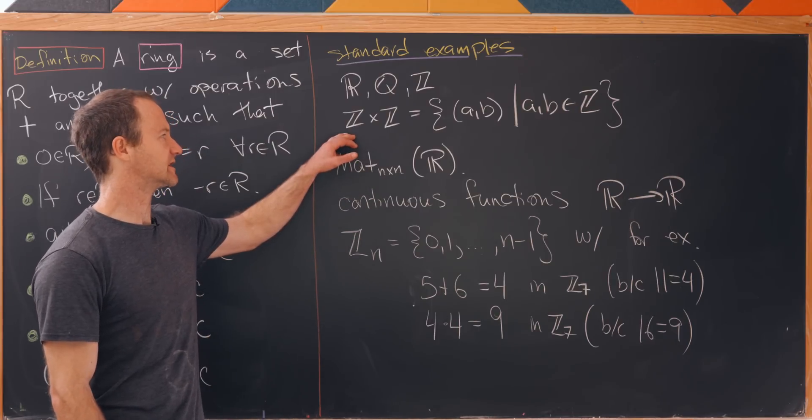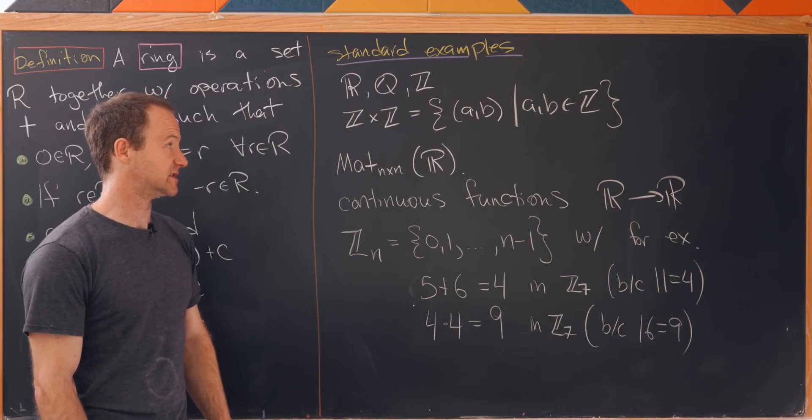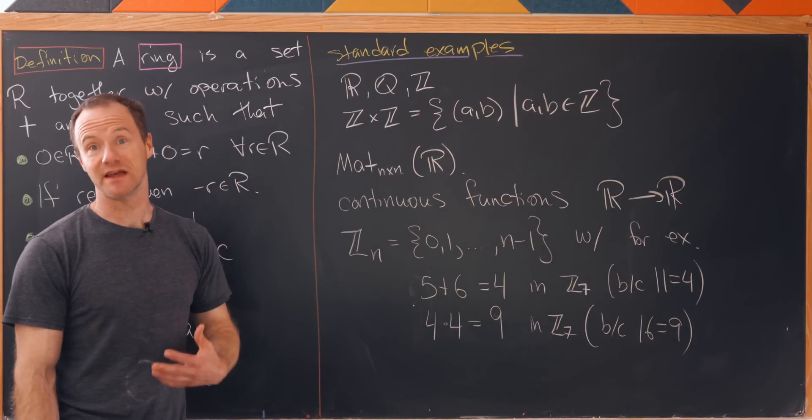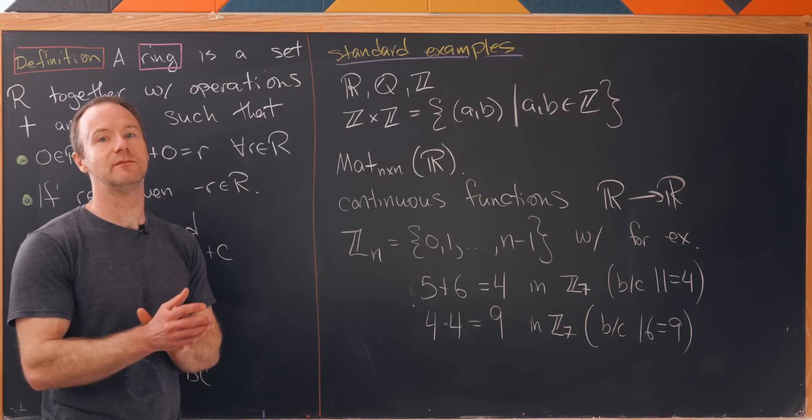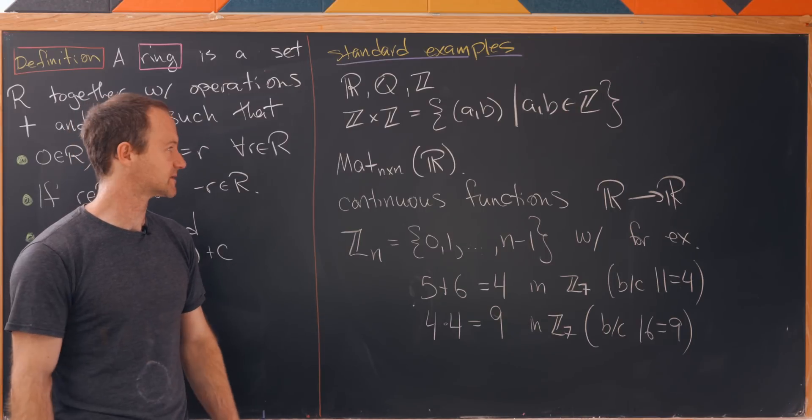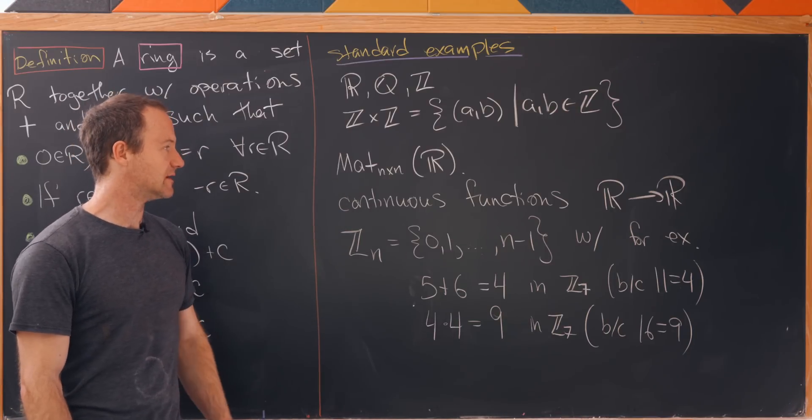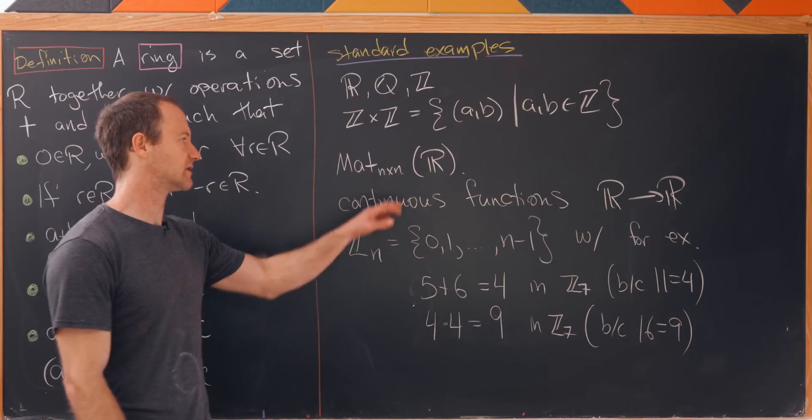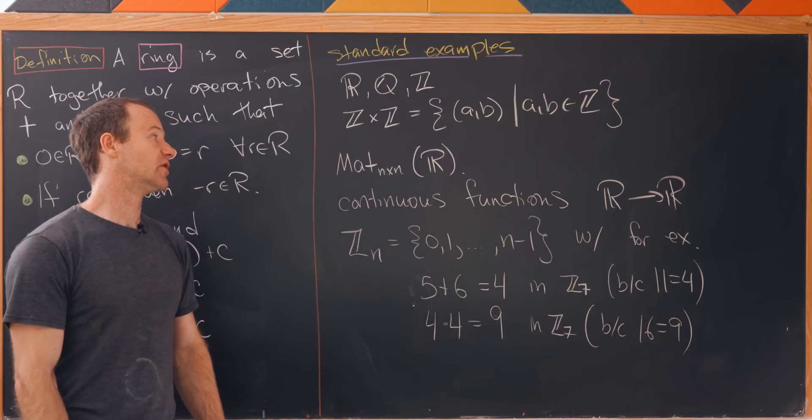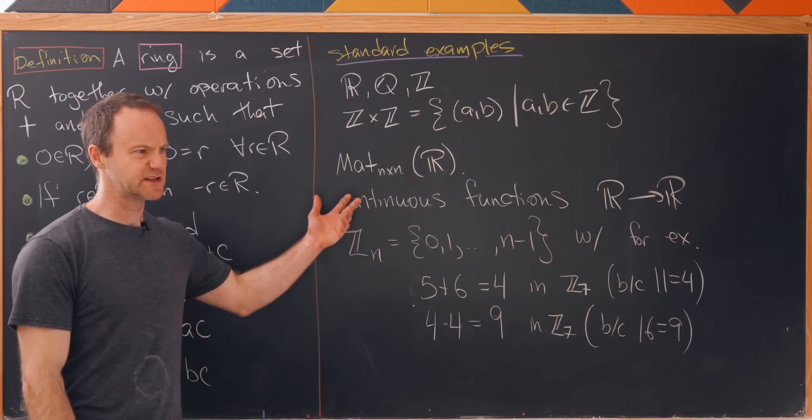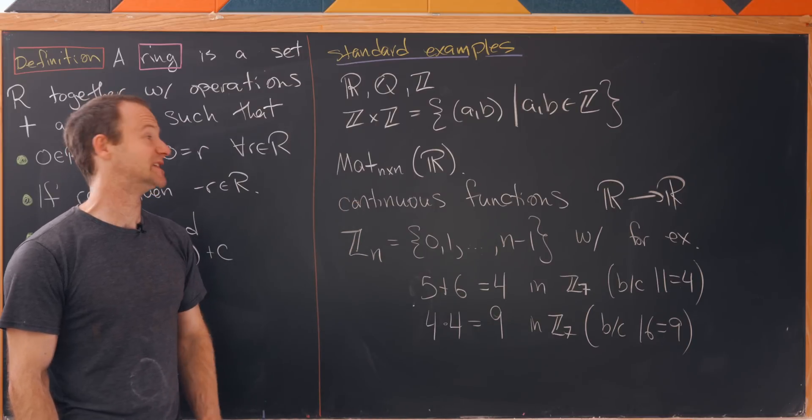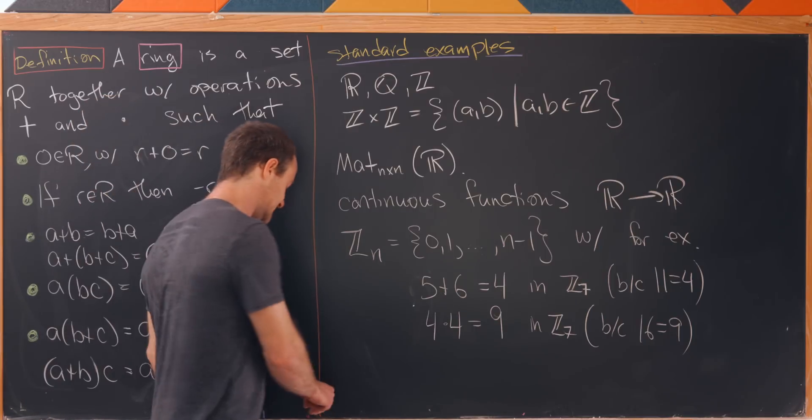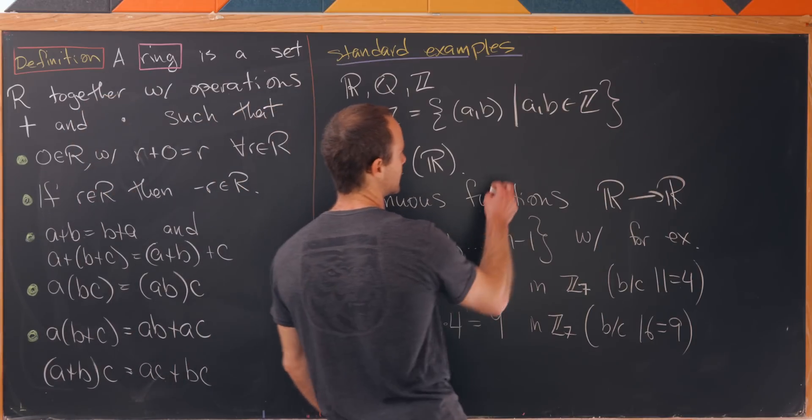And then there are some other things like Z cross Z. So that's going to be all ordered pairs with entries from integers. And here the operation can happen component wise. Then you could also have n by n matrices with entries pretty much anywhere you want. But let's put the entries inside of the real numbers. And so this is going to be a ring but the multiplication is not commutative here.